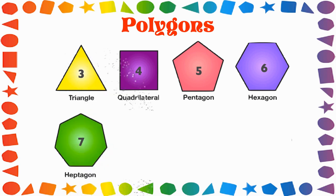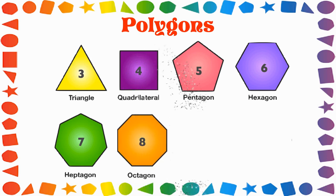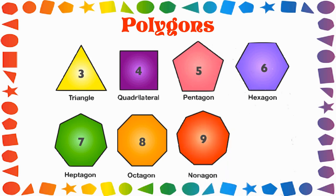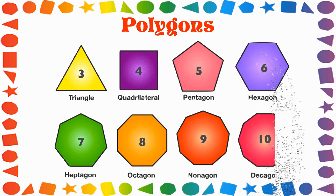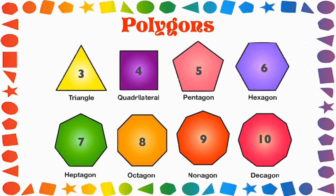The seven-sided polygon is called a heptagon. The eight-sided polygon is called an octagon. The nine-sided polygon is known as the nonagon. And the ten-sided polygon is known as the decagon.